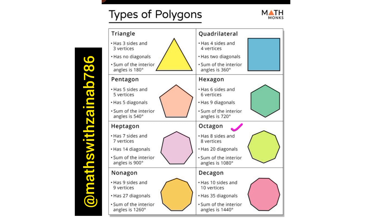An octagon has eight sides and eight vertices, 20 diagonals, and the sum of the interior angles is 1080 degrees. A nonagon has nine sides and nine vertices, 27 diagonals, and the sum of the interior angles is 1260 degrees. The last one is a decagon, which has 10 sides and 10 vertices, 35 diagonals, and the sum of the interior angles is 1440 degrees.